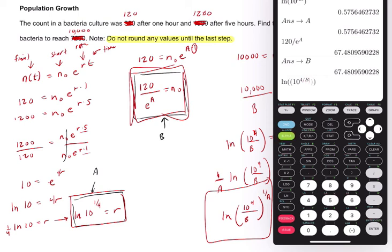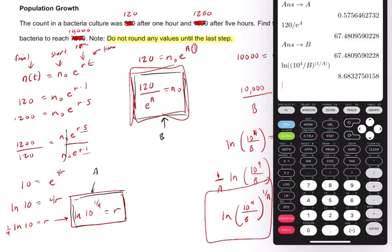Parentheses again, 10 to the fourth because I want to raise the whole fraction 10 to the fourth over B. I want to raise that to the fourth, that's not correct. Okay, divide that 10 to the fourth by B, and then raise that to the 1 over A. So I'll put 1 over A in parentheses.